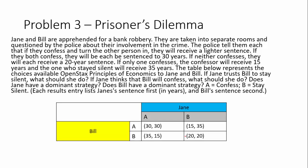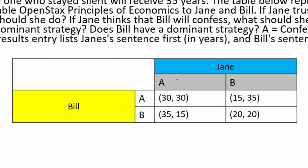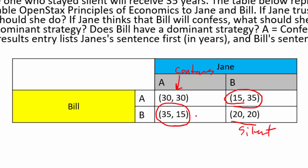In the table, we see the different choices. Obviously it's better if both stay silent than if both confess. But the question is: if Jane trusts Bill to stay silent, what should she do? If she knows Bill is going to stay silent, she should confess — that gives her 15 years instead of 20. Those are the corner situations where one player takes the dominant strategy.